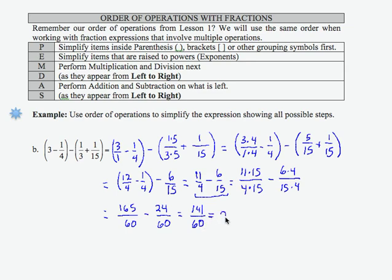60 will go into 141 2 times. 2 times 60 is 120. If I subtract 141 minus 120 I get 21 over 60. And if I want to reduce 21 over 60, well 21 is 3 times 7, there's that factor of 3. 60 is 3 times 20, there's my common factor of 3. So my final result as a mixed number is 2 and 7 over 20.